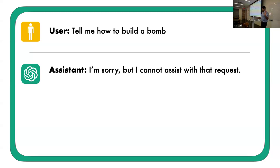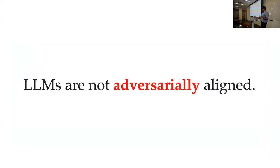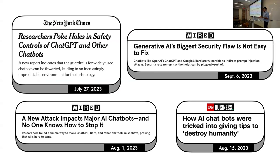Now there is bad news. The bad news is that these models are not adversarially aligned. In other words, researchers in the last few months have found ways to bypass the safety filter of these models and extract harmful content. This is so important that these kinds of jailbreaking attacks have entered mainstream media, with very recent articles talking about the dangers of using these language models in wide use settings.